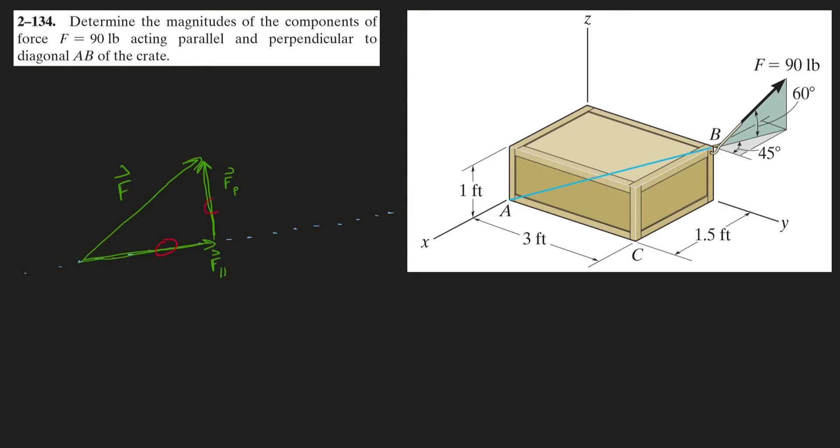So this will be my perpendicular component. Remember, these two are components. Components are just smaller vectors that do that tip-to-tail adding to add up to the main vector. So the objective here is to find these two components instead of the conventional x and y components.